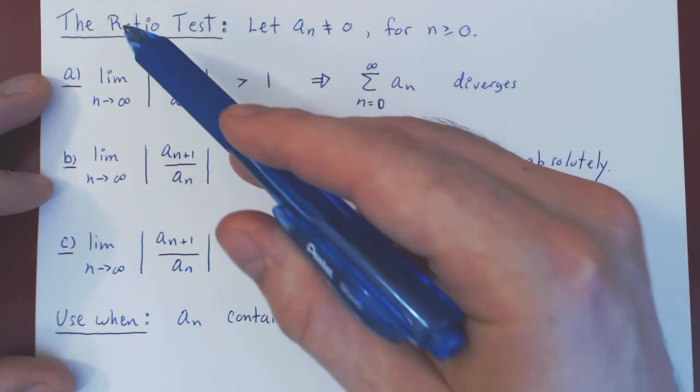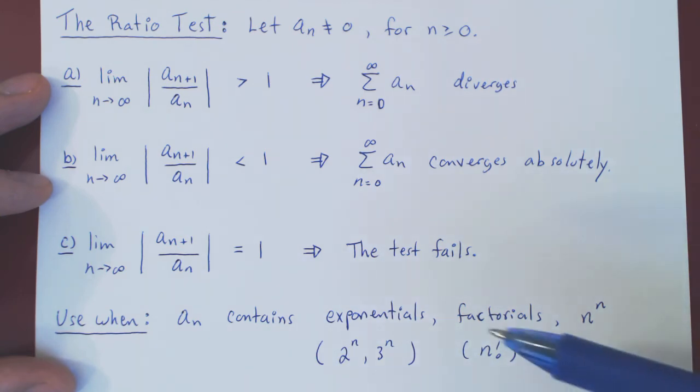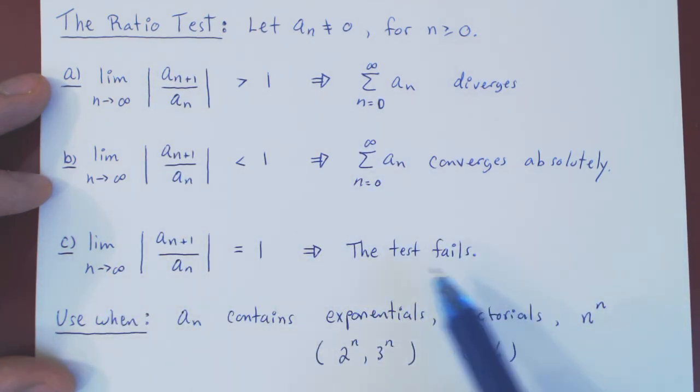And so the key point is: never use the ratio test if you don't have one of these three things—an n to the n as part of an, a factorial (any type of factorial should do), or an exponential. If you have smaller functions in terms of order of magnitude when n is large, such as power functions or logarithmic functions, the ratio test will return a limit of 1 and that test will simply fail.